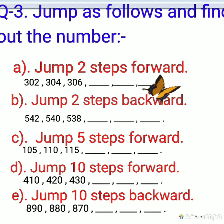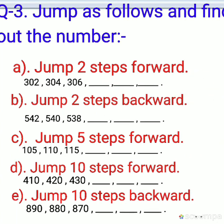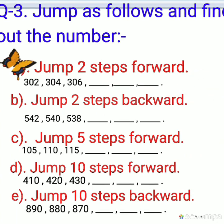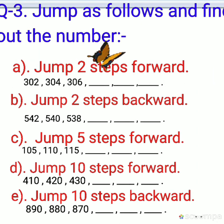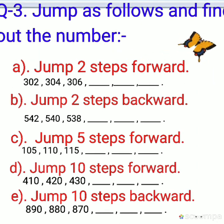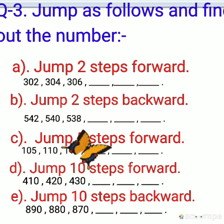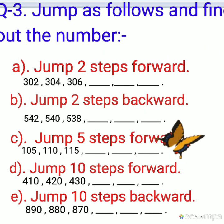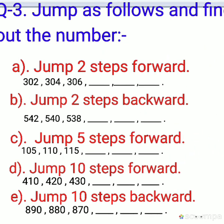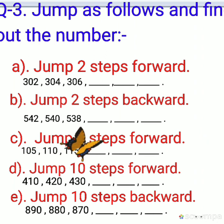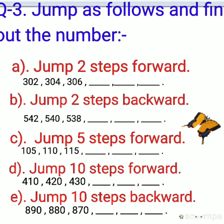B. Jump two steps backward. In the first one we did forward counting. In B you will do backward counting. You will go backwards in numbers. 542, 540. If you go two steps back, which number will come? 538. Like this, continue the pattern.